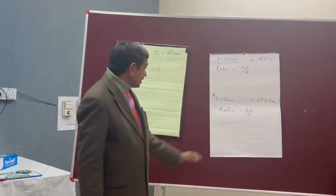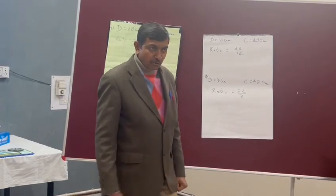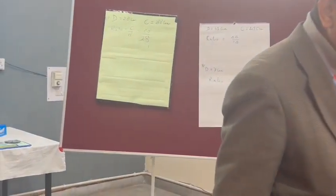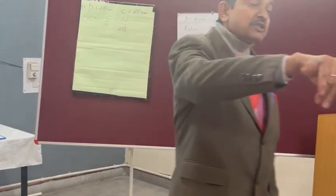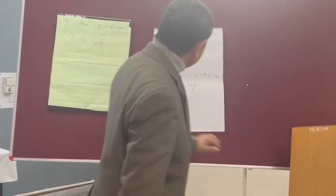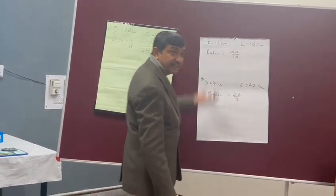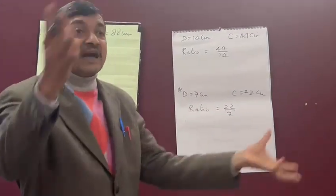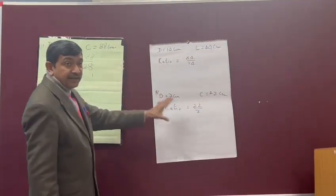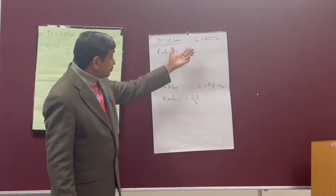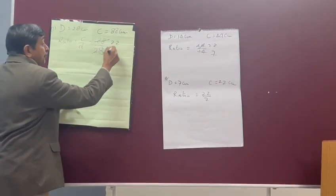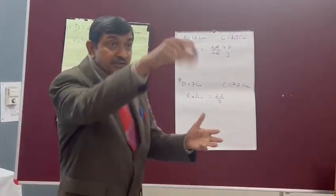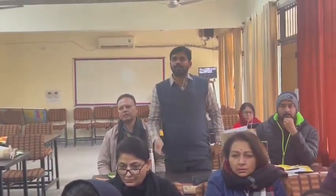Anybody can tell me: if I do half of this measurement, what will be the ratios? Om Prakas Sir — circumference ka half karengi toh kya hooga? Eleven. And diameter ka half karengi toh kya hooga? Whether you take half or double of these measurements — same parts ko double ya half karte chale jai — toh ratio kya banega? Twenty-two by seven. By the way, what we got is twenty-two by seven. Ratio is constant.